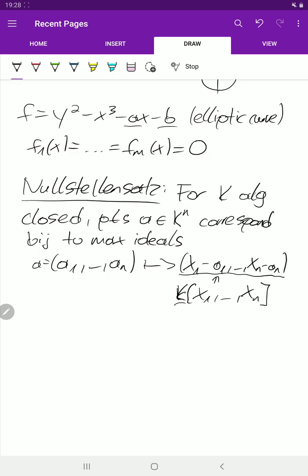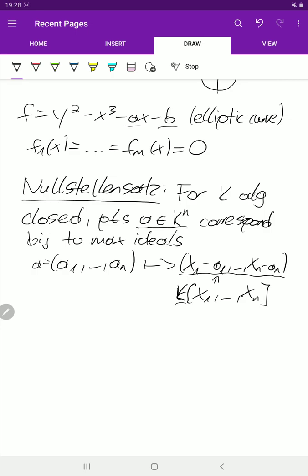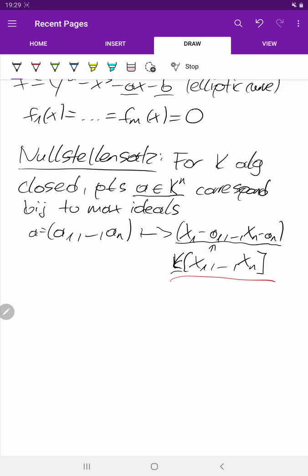The actual statement is that all maximal ideals for k algebraically closed are of this form. Now in geometry we are interested in these points A and k to the n. But now we've seen that they correspond bijectively to maximal ideals of this ring here. We can translate it to points to maximal ideals. That means that we are interested in maximal ideals.